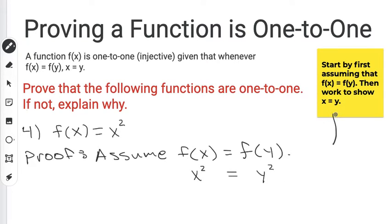I want to show that x equals y to finish off the proof. So to get rid of that exponent of 2, I need to take the square root of both sides. But when I do that, something strange happens.